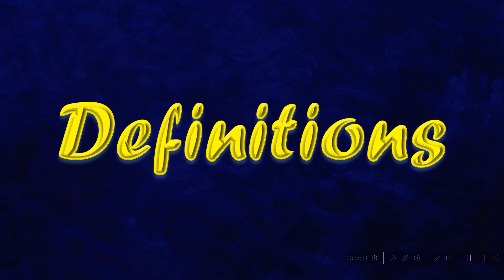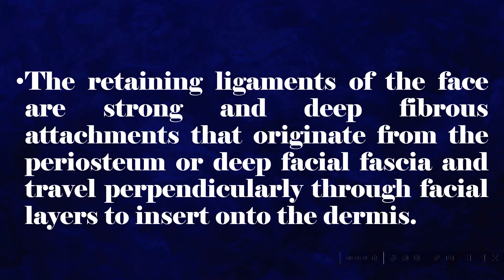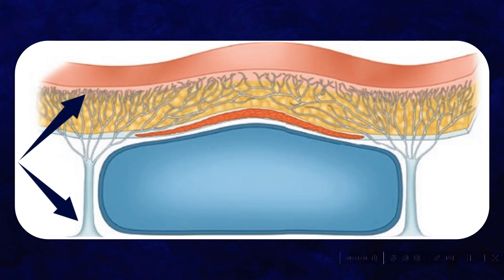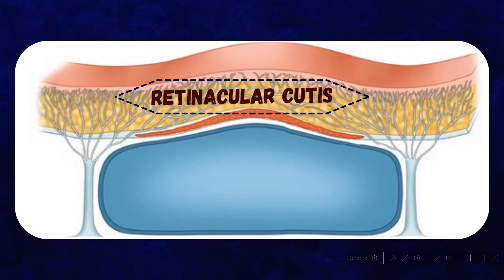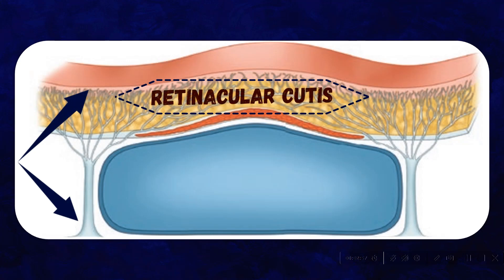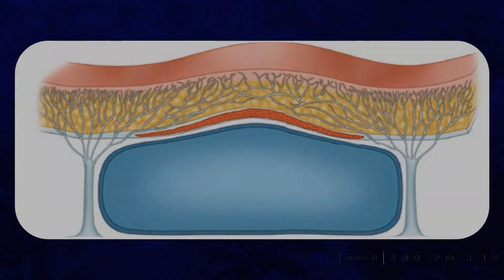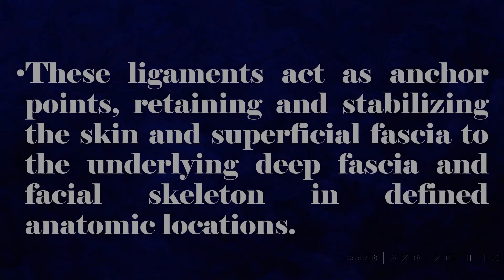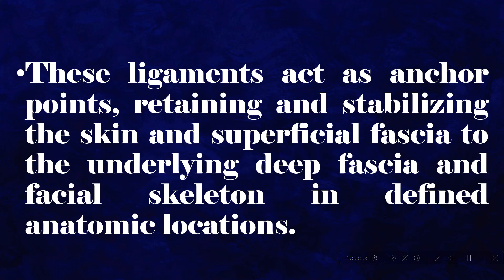The retaining ligaments of the face are strong, deep fibrous attachments that originate from the periosteum or deep facial fascia and travel perpendicularly through facial layers to insert onto the dermis. They are dense fibrous adhesions between the periosteum or deeper fixed structures and the dermis. Once reaching the SMAS and dermal layer, the facial structure divides and forms a complex network of fibrous septa in the subcutaneous tissue called the retinacular cutis. Microscopically, each ligament is rooted in a tree-like distribution as a periosteal or deep facial thickening that divides as it approaches the SMAS into numerous branches, which insert onto the dermis. These ligaments act as anchor points, retaining and stabilizing the skin and superficial fascia to the underlying deep fascia and facial skeleton in defined anatomic locations.